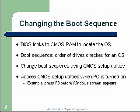Changing the boot sequence: the BIOS looks to CMOS RAM to locate the operating system. The boot sequence is the order of drives checked for the OS. Normally you might set the CD-ROM to be checked first for an operating system, and then the hard drive — that way if the hard drive isn't functioning or you want to boot from a CD-ROM, you can do that without changing the BIOS. In your BIOS you do have a boot order — it might be floppy drive, hard drive, CD-ROM, or flash drive, in any of those combinations. We can change that sequence.